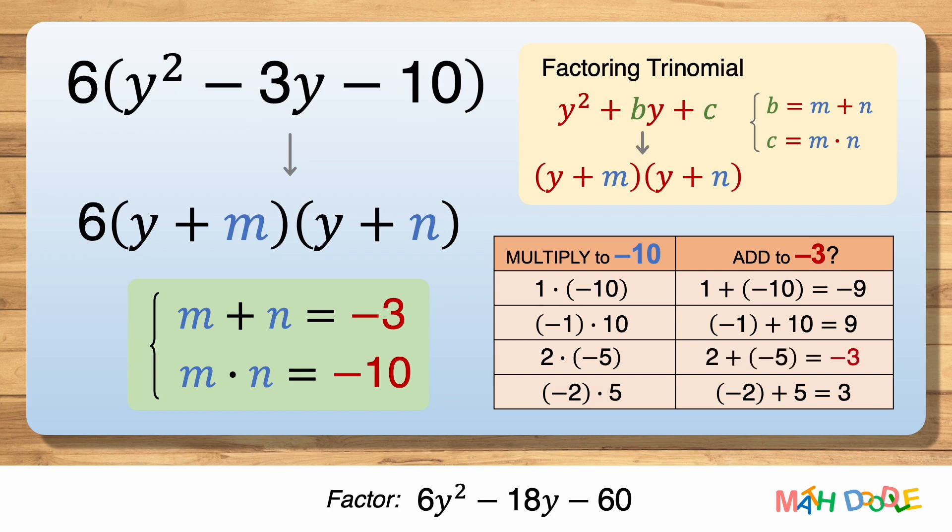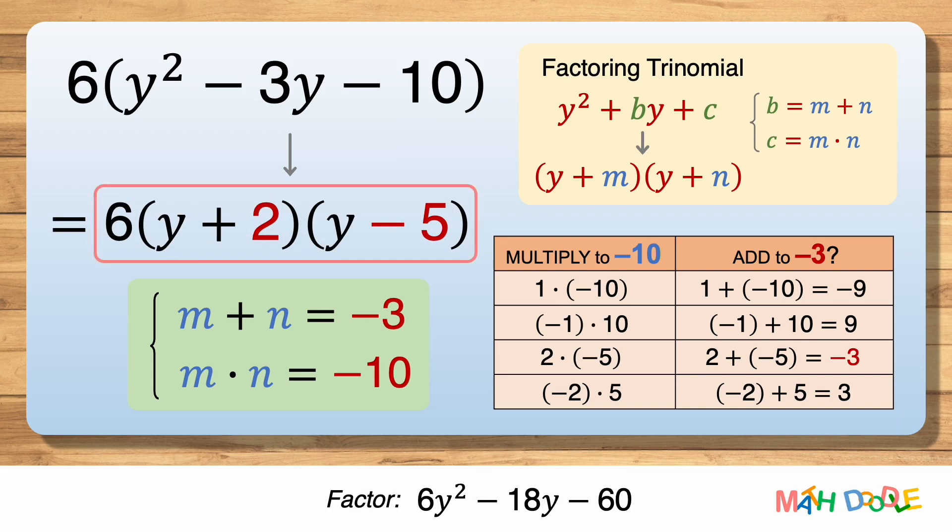Now 2 plus -5 is -3, so 2 and -5 not only multiply to -10 but also add to -3. This means m and n are 2 and -5, so the answer is 6 times (y + 2) times (y - 5).